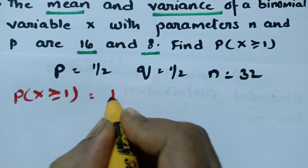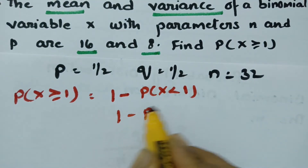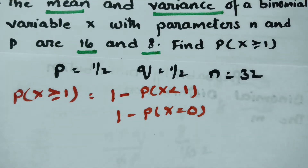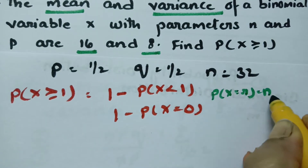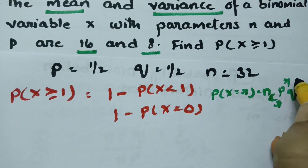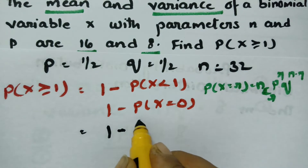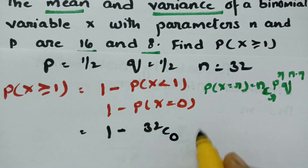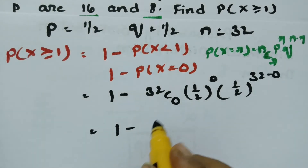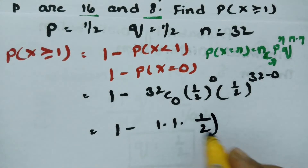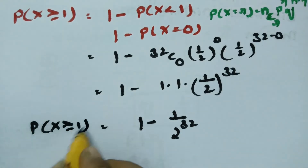Instead of computing all those terms, I write this as 1 minus probability of x less than 1, which is 1 minus probability of x equals 0. Substituting into the binomial formula P(x=r) = nCr × p^r × q^(n−r), this becomes 1 minus 32C0 × (1/2)^0 × (1/2)^32, which equals 1 minus 1 divided by 2^32.